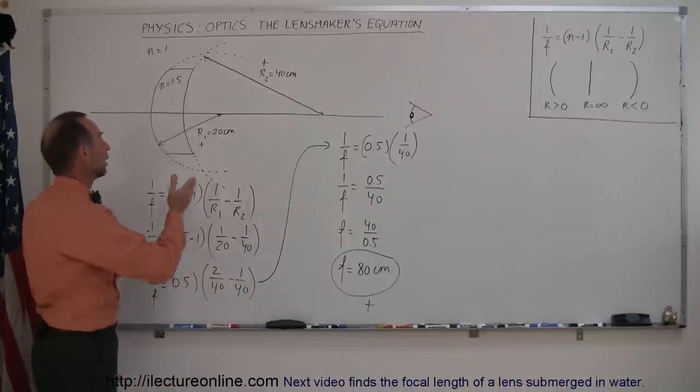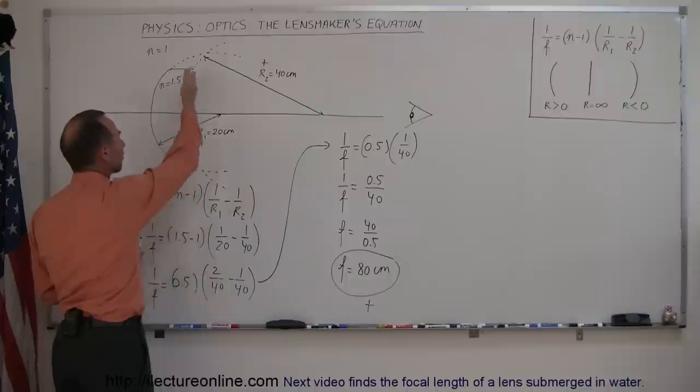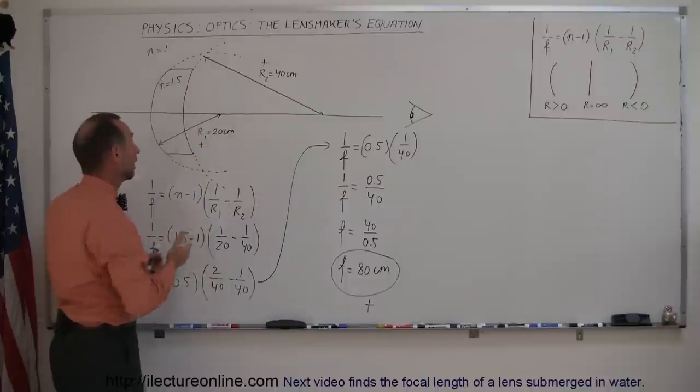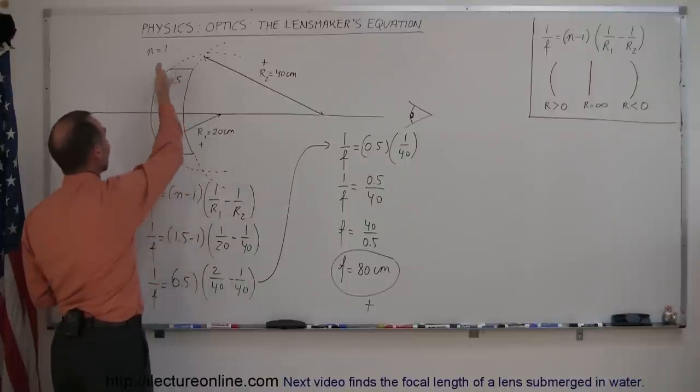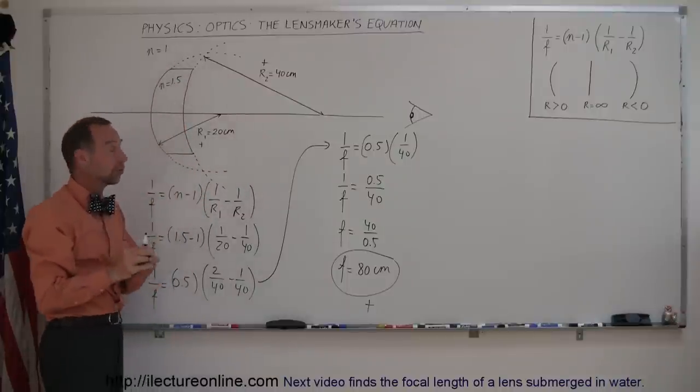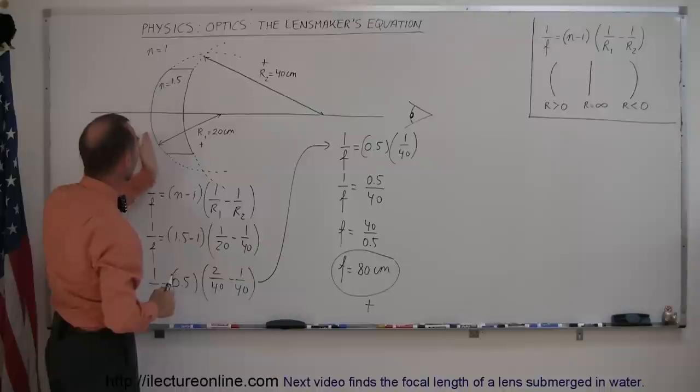So even though the backside of the lens looks like a diverging lens, and the front side of the lens looks like a converging lens, since the front side of the lens, the one that looks like a converging lens, has a smaller radius of curvature,